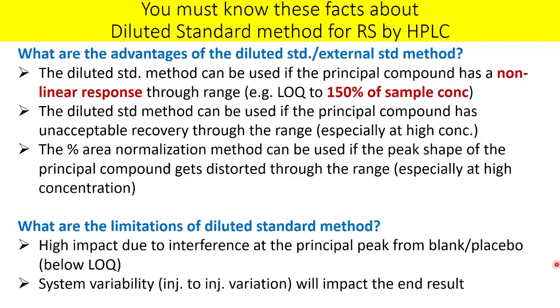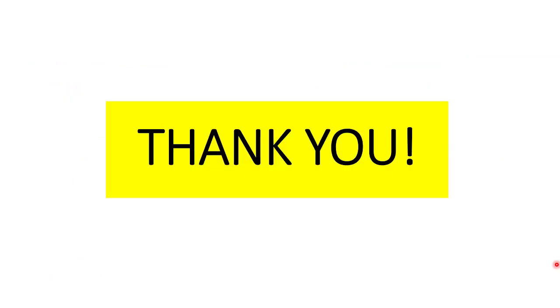The second limitation is system variability — injection-to-injection variation will impact the end result. You must have a suitable analytical test procedure with the highest possible degree of repeatability precision. I hope you are now clear on understanding and implementing the diluted standard method for quantification of related substances.